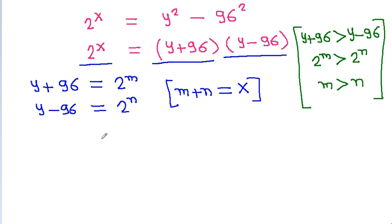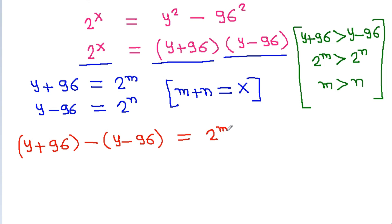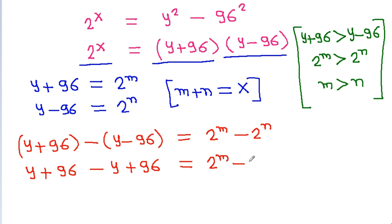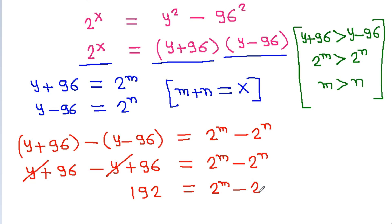If we subtract both equations, then (y plus 96) minus (y minus 96) equals 2^m minus 2^n. The y terms cancel, and 96 plus 96 gives us 192, so 192 equals 2^m minus 2^n.